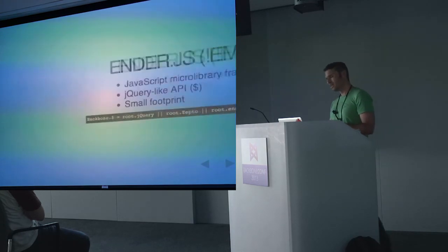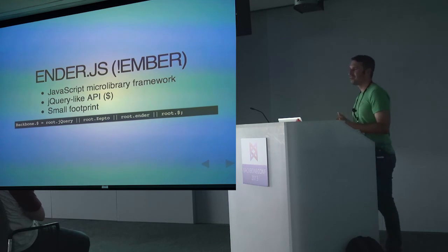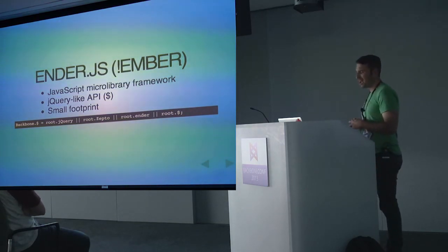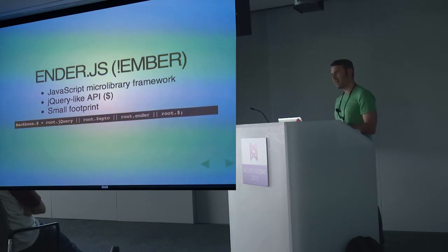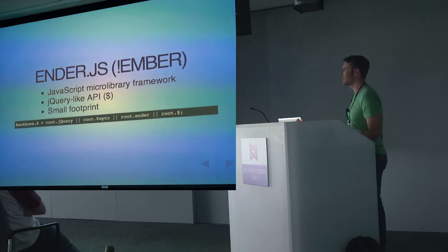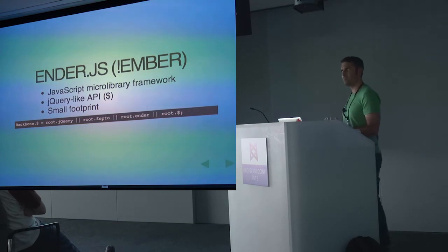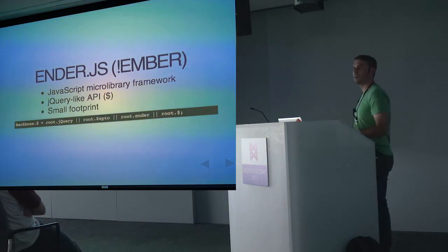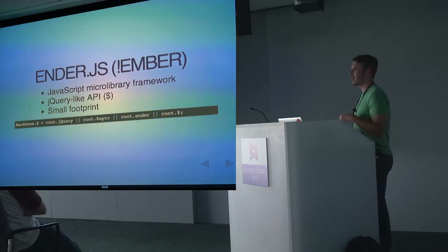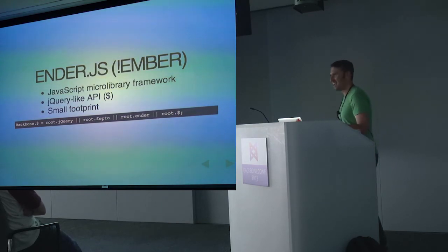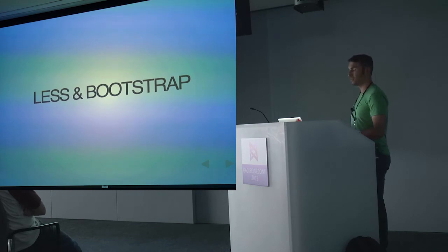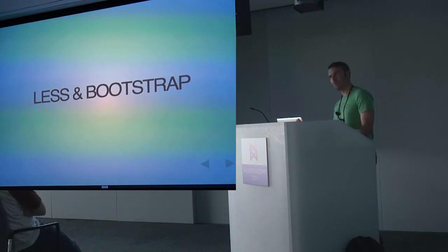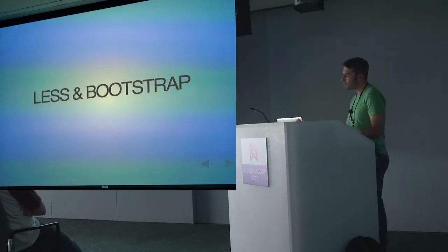To that point, we decided not to use jQuery. We went with Ender, which is a collection of micro libraries — maybe a fifth the size of jQuery, probably covering 70 or 80% of the functionality. We thought that was enough. Backbone technically supports it — there's one line of code in Backbone that looks for Ender. And we used Less and Bootstrap. If you look at Disqus today, it's actually Bootstrap — probably about 25% of it, really just the foundational stuff.